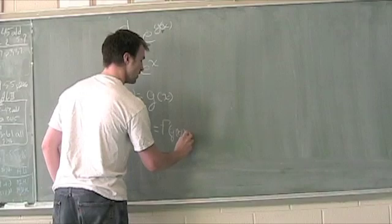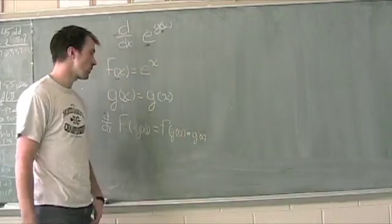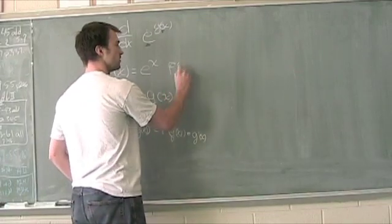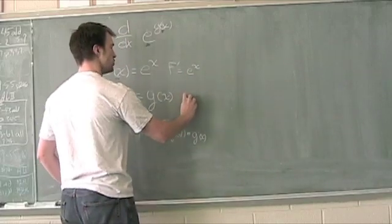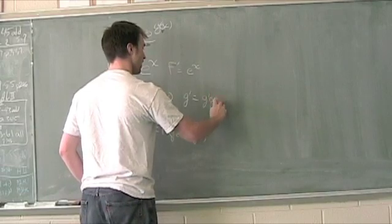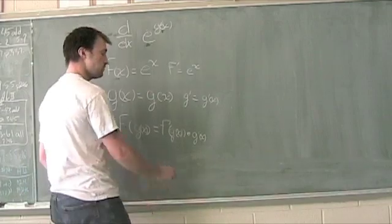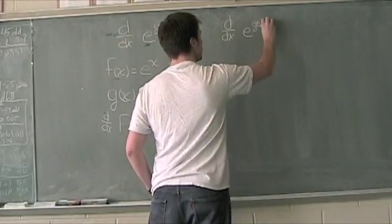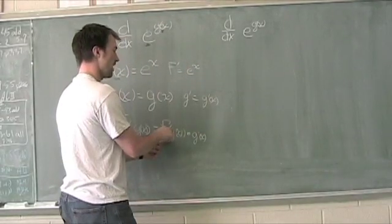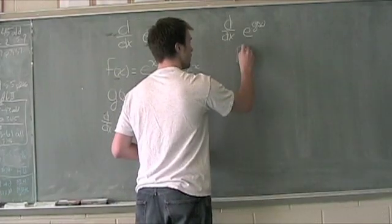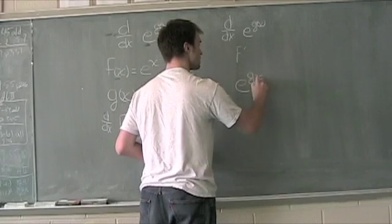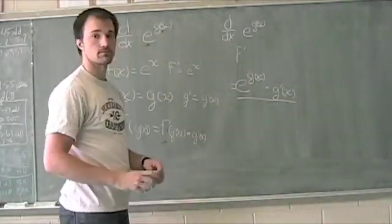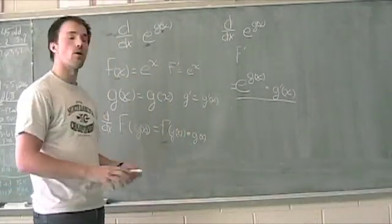We take that times whatever's on the inside, g prime of x. f of x is e to the x, so f prime of e to the x is simply e to the x. And g prime here is equal to g prime of x — the derivative with respect to x of the function g. So the derivative with respect to x of e to the g(x) is e to the g of x times g prime of x. We're going to look at specific examples in the next few videos, and hopefully it'll start to make more sense.